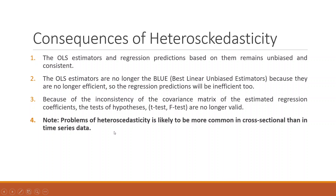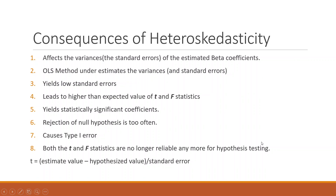Problems of heteroscedasticity are likely to be more common in cross-sectional than in time series data. It affects the variances and standard errors of the estimated beta coefficients. The OLS method underestimates the variances and standard errors, yielding low standard errors. This leads to higher than expected values of T and F statistics, which yields statistically significant coefficients, leading to the rejection of the null hypothesis and causing a Type I error. Both T and F statistics are no longer reliable for hypothesis testing.